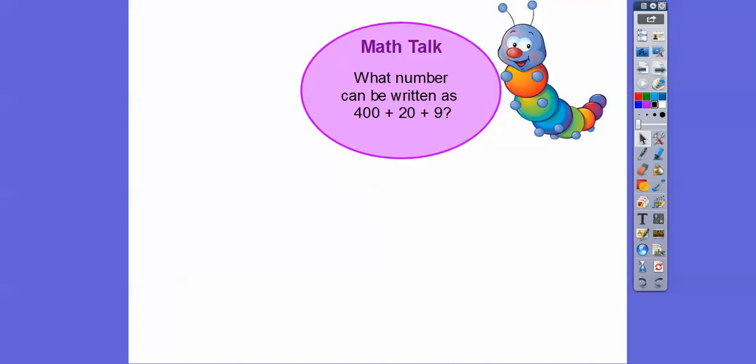So what number can be written as 400 plus 20 plus 9? Well, let's go backwards. That would be 429. So 429 is 400 plus 20 plus 9.